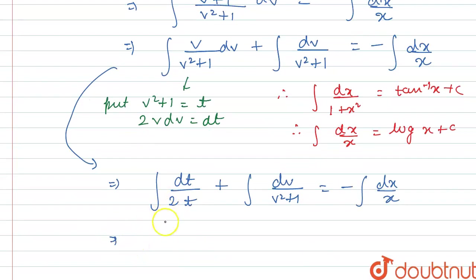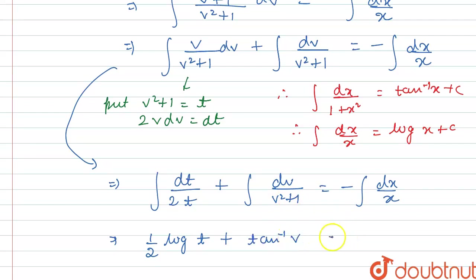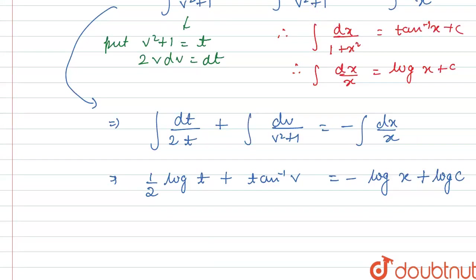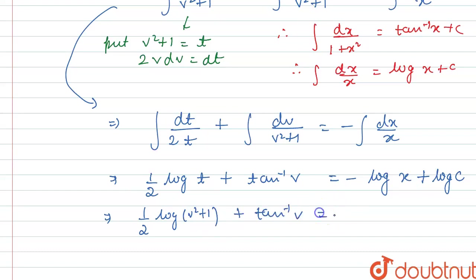Solving: (1/2)log t + tan⁻¹v = -log x + log c. Now put back t = v² + 1, so this becomes (1/2)log(v² + 1) + tan⁻¹v = -log x + log c.